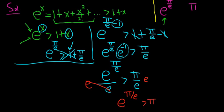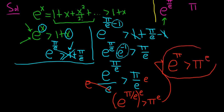And now to get rid of the e, we can raise both sides to the e-th power. So e times π/e, that means that the e's cancel. So you get e^π greater than π^e. So that is the conclusion, e^π is bigger than π^e.